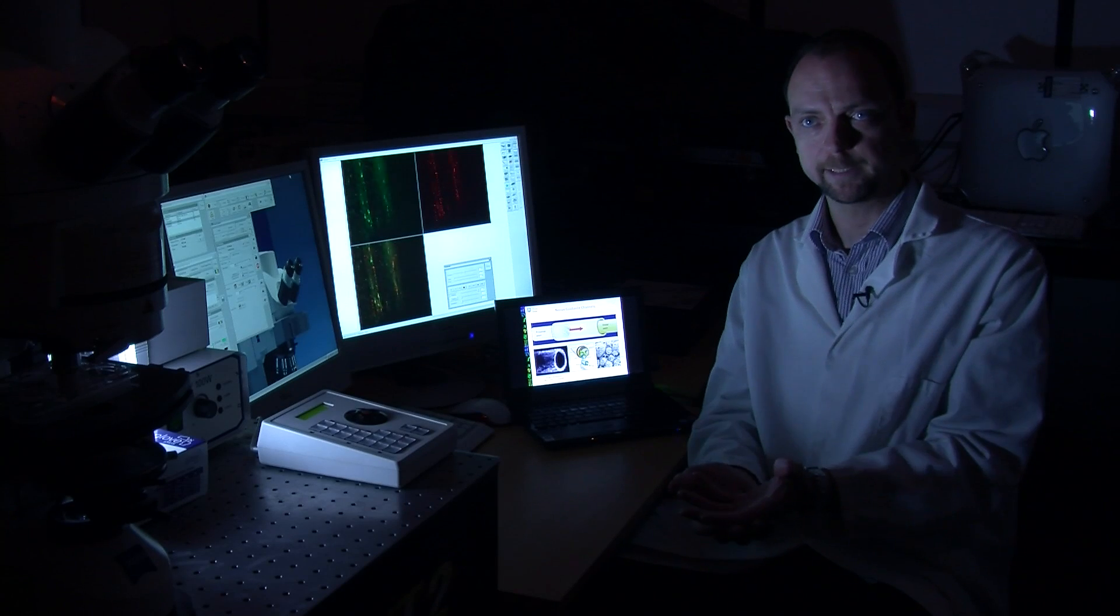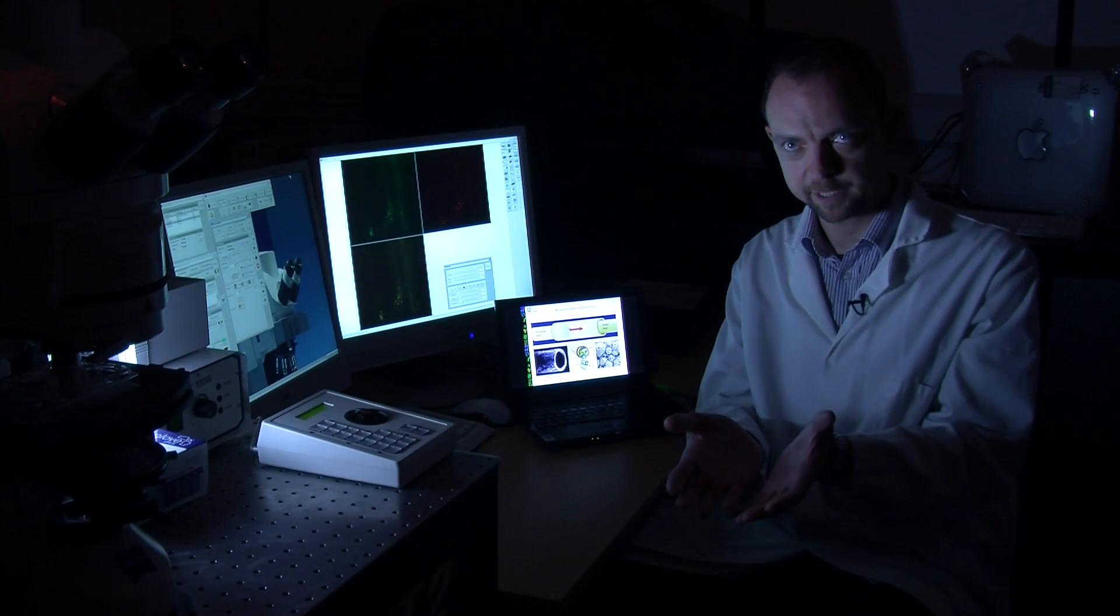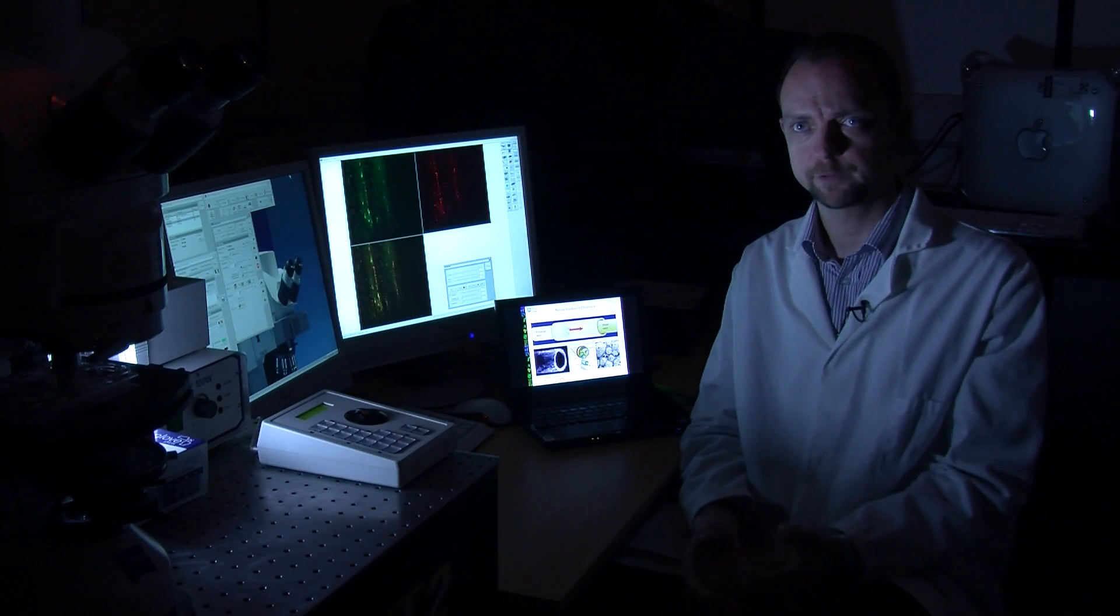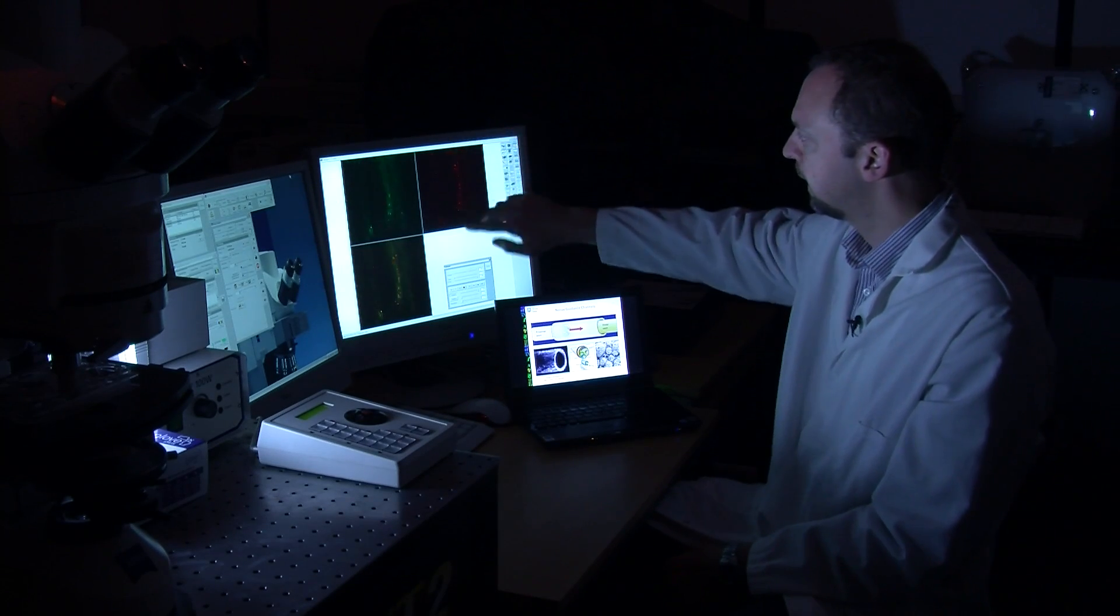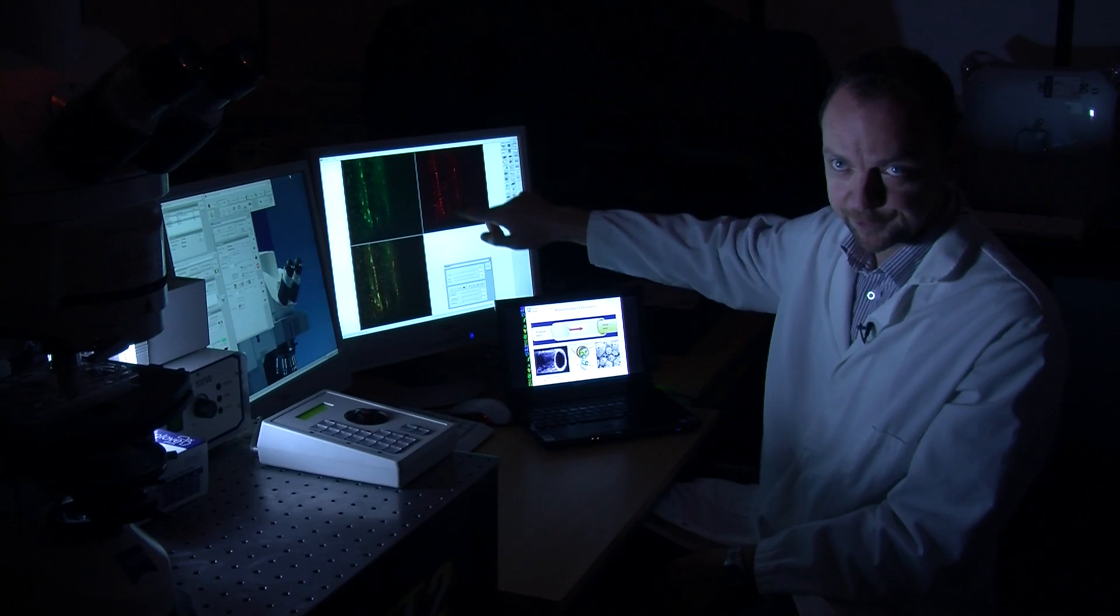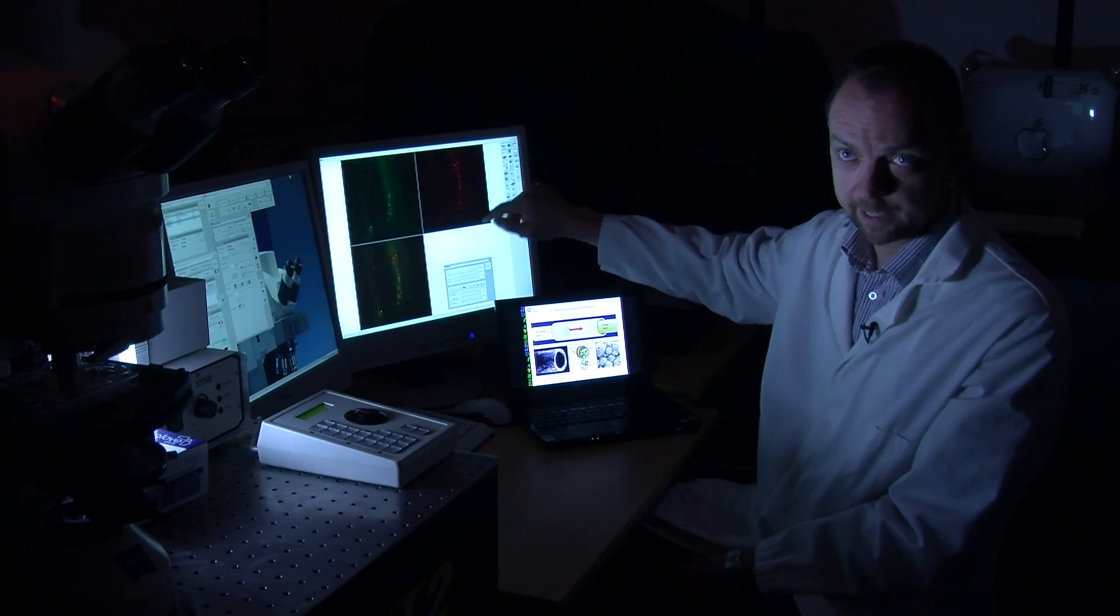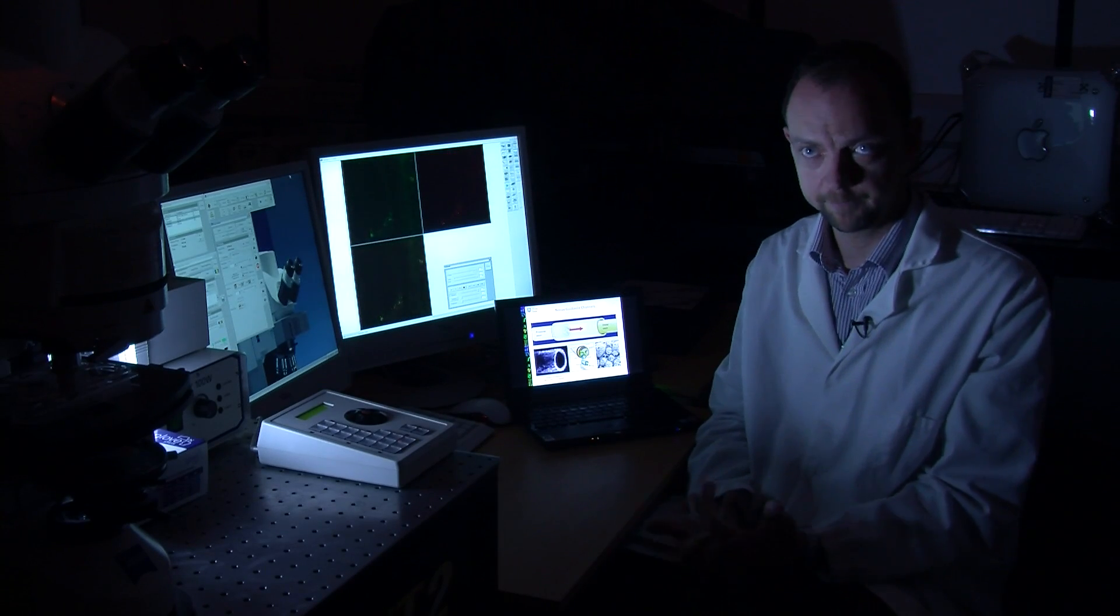We can simulate that in a simple experiment by putting the two together - the nerve cells and the fibers together - growing them and then imaging using this microscope. The basic question we're asking is very important: do the scaffolds support the growth of those aligned nerve fibers? What we see on the screen here is hundreds and hundreds of individual aligned nerve fibers that have grown along the scaffold. That tells us that these particular scaffolds do indeed support the growth of complex nerve cells.